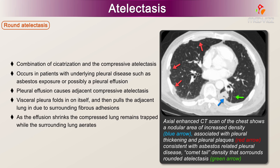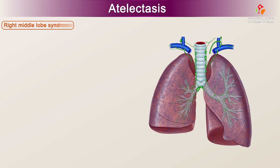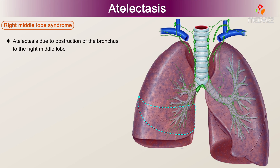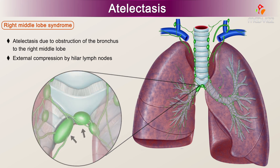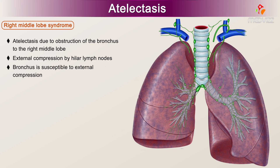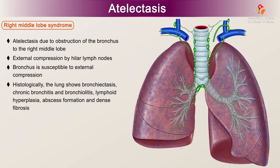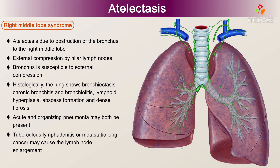As the effusion shrinks, the compressed lung remains trapped while the surrounding lung aerates. Right Middle Lobe Syndrome refers to atelectasis due to obstruction of the bronchus to the right middle lobe, usually from external compression by hilar lymph nodes. This bronchus is particularly susceptible to external compression because it is long and slender and surrounded by lymph nodes. Histologically, the lung shows bronchiectasis, chronic bronchitis, bronchiolitis, lymphoid hyperplasia, abscess formation, and dense fibrosis. Acute and organizing pneumonia may both be present. Tuberculous lymphadenitis or metastatic lung cancer may cause the lymph node enlargement, but the cause of the obstruction is often undetermined.